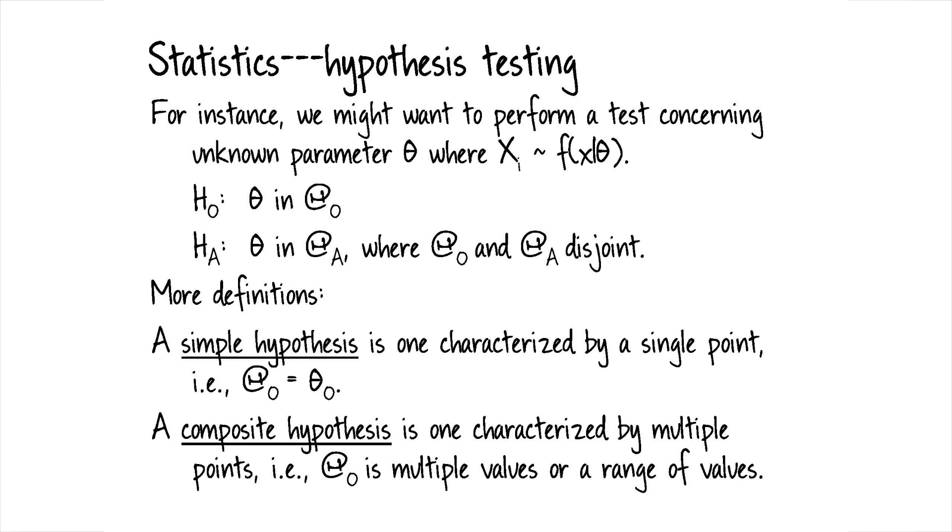I'm going to do an example where each is known as a simple hypothesis. There's one point associated with each hypothesis. And then we'll sort of analyze that case because it's very simple to analyze. And then we'll talk about what happens if actually the parameter is not one of those two values. So we'll get to that. But yeah, thanks for pointing that out.